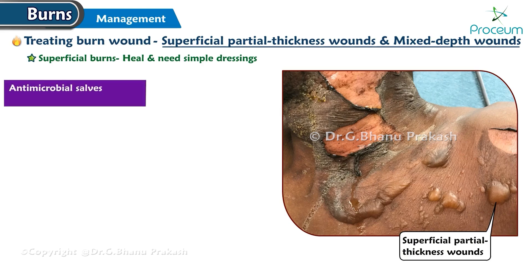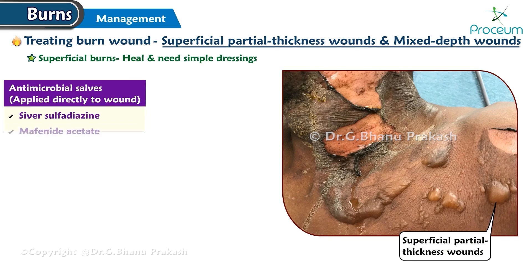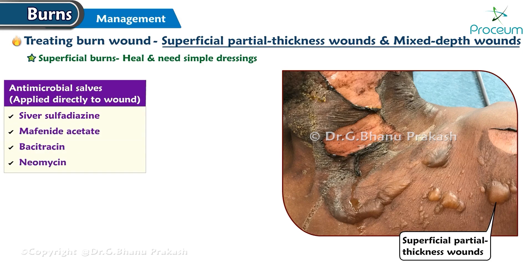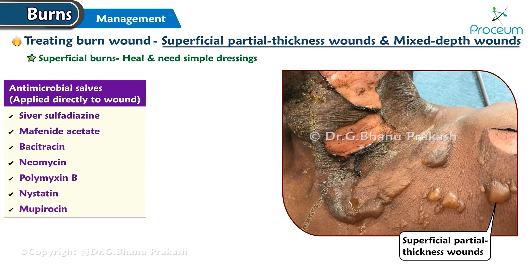Antimicrobial salves are generally applied directly to the wound. These include: silver sulfadiazine, mafenide acetate, bacitracin, neomycin, polymyxin B, nystatin, and mupirocin.